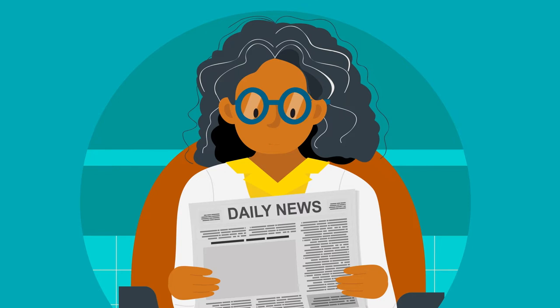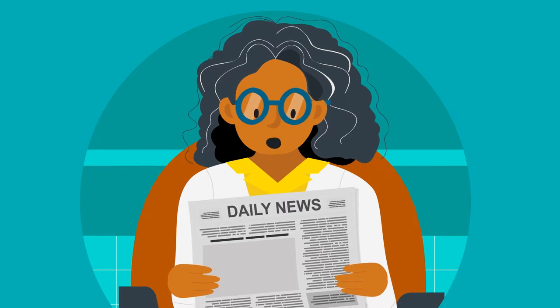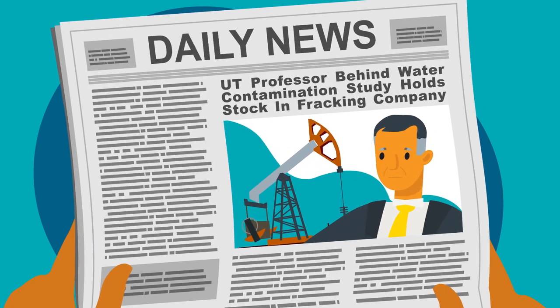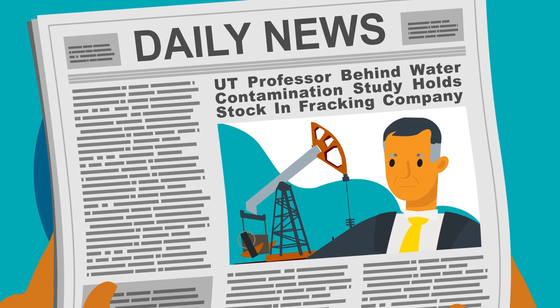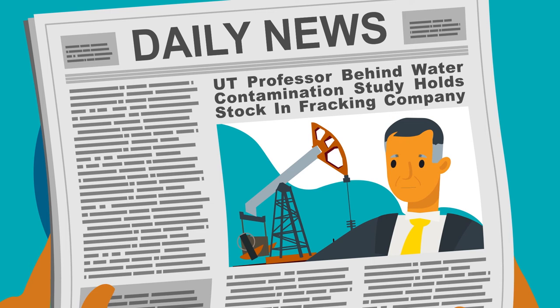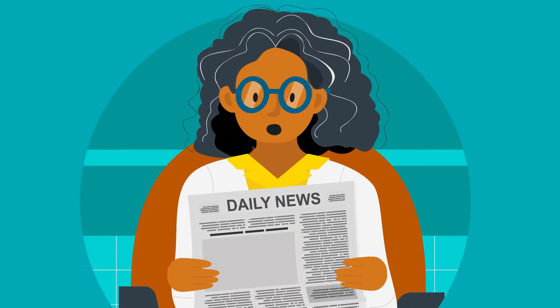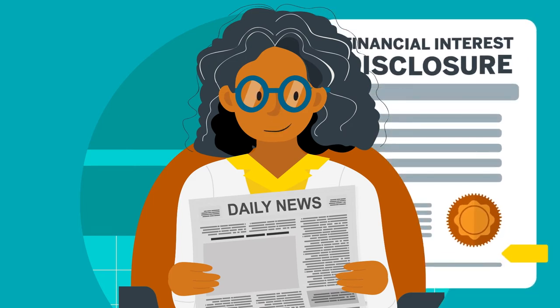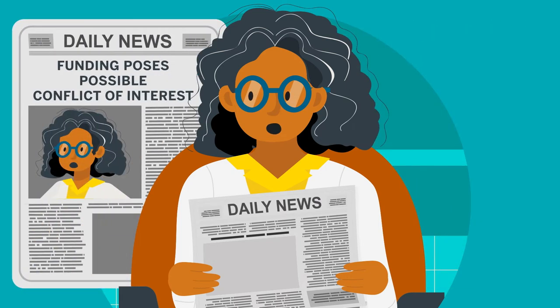As an investigator, even if you do manage to avoid being influenced by your personal financial interests, you must keep in mind that simply the appearance of impropriety may undermine both your reputation and your university's reputation for honest research. Fortunately, the appearance of bias caused by financial or non-financial interests can be mitigated by practicing full and fair disclosure.